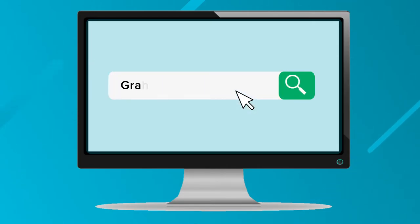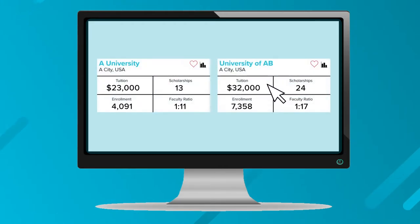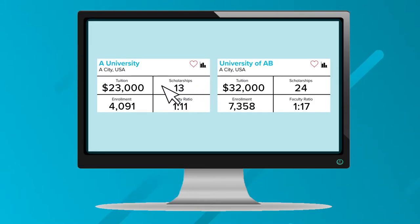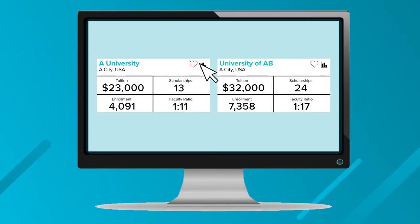From there, you'll be able to search for any college based on name, keyword, or preferred major. Next, a results page will show up based on your search criteria. Here you'll be able to compare colleges from tuition, scholarships, faculty ratio, and enrollment. You can also click on the little bar graph icon there to compare it to other schools using our College Compare tool right on the website.